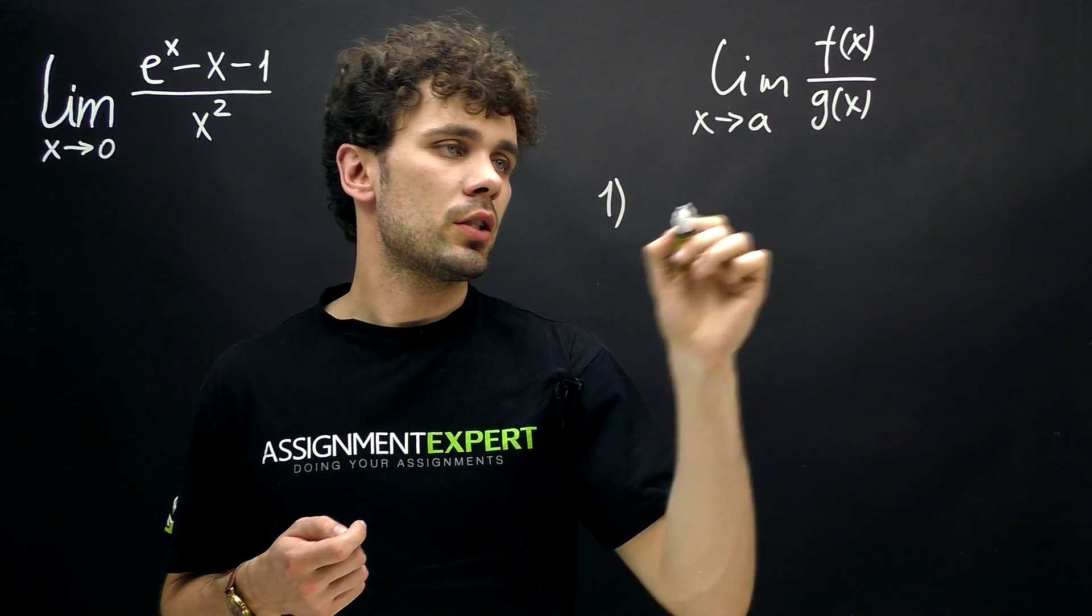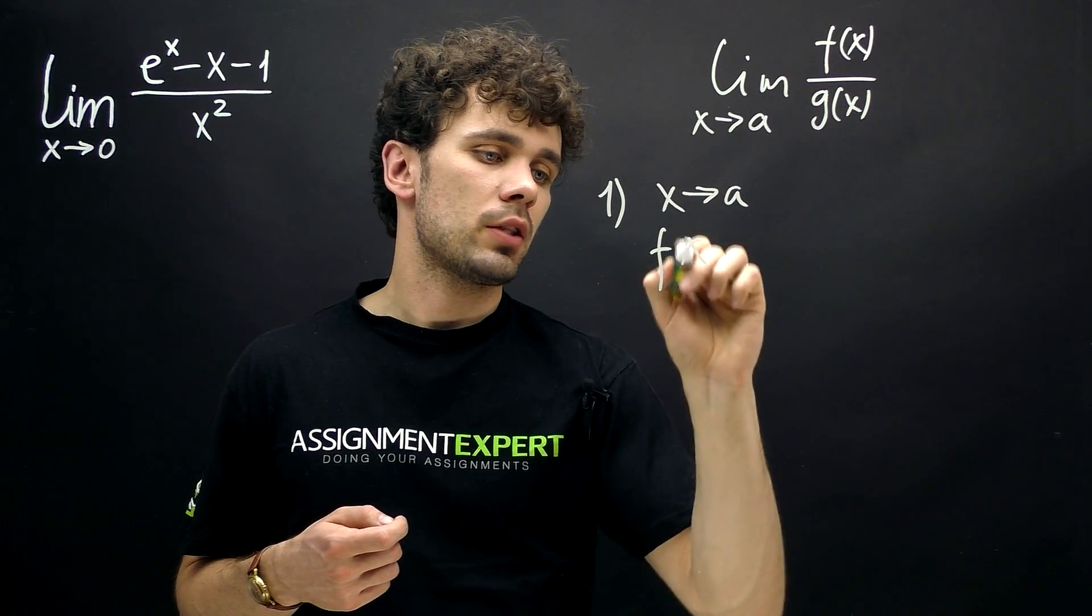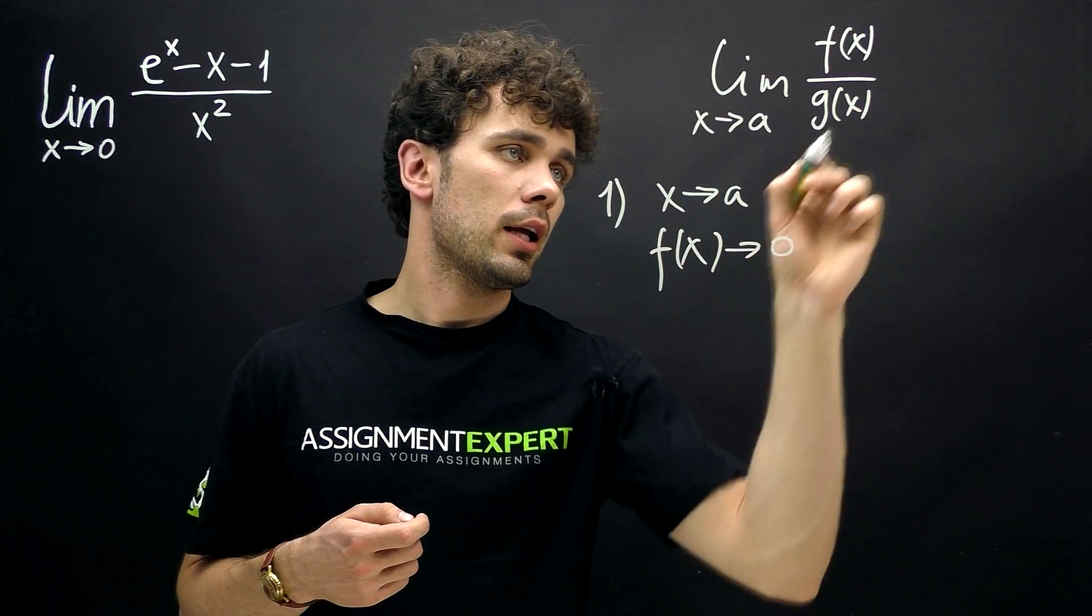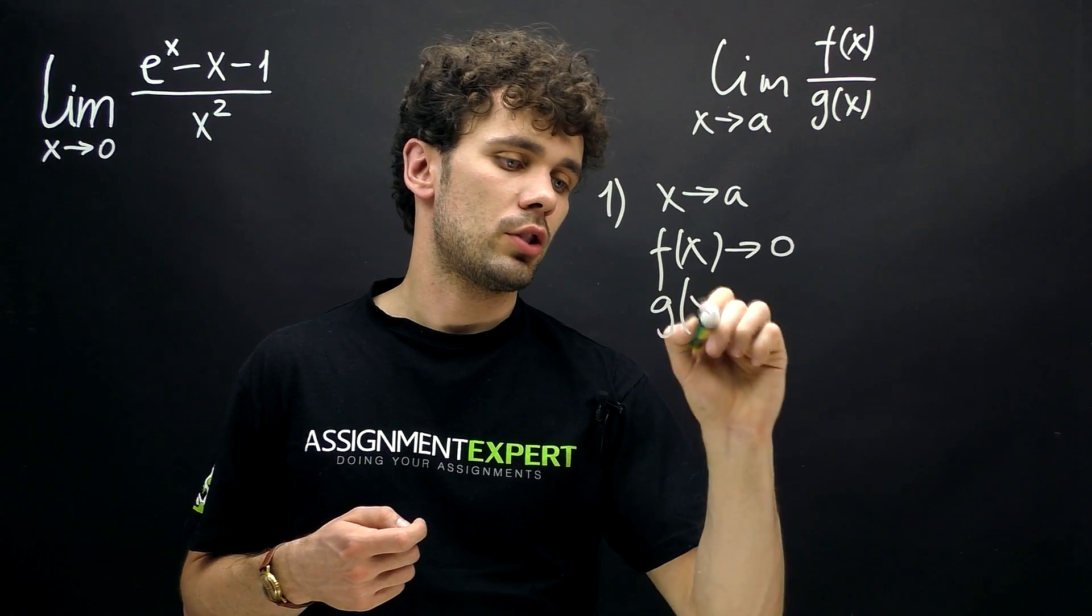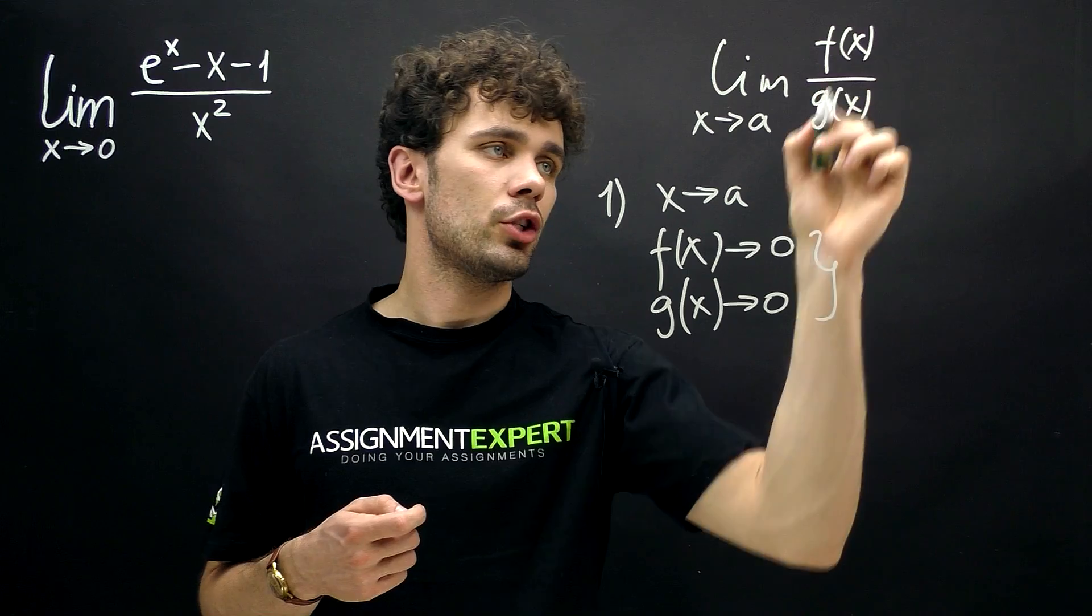The first one is that for x tends to a, f of x should tend to zero and also g of x should tend to zero. So we will get indeterminate zero over zero.